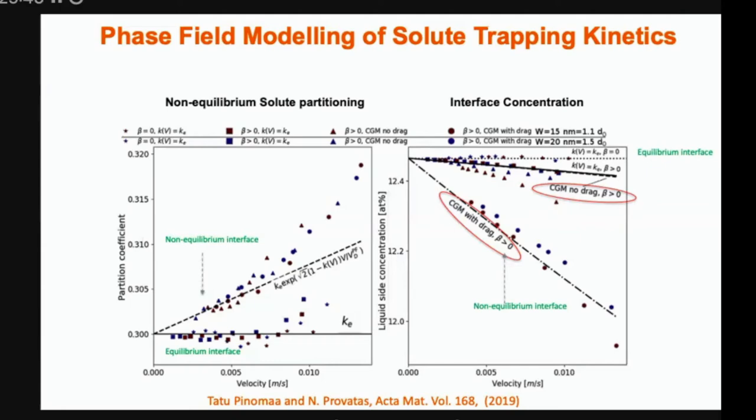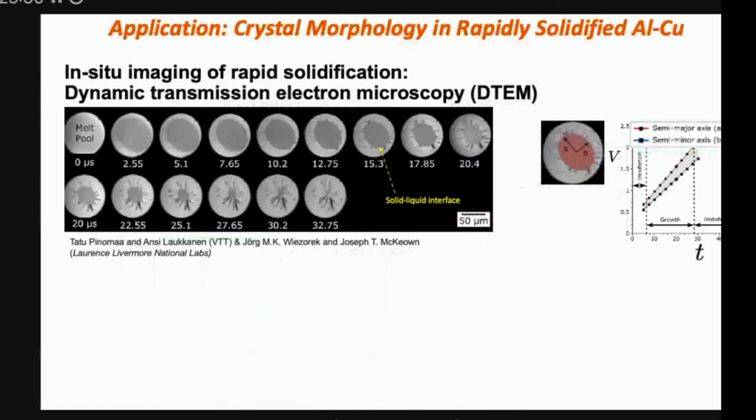So now, armed with this model that can presumably handle non-equilibrium kinetics at the interface, we set out to look at some applications of this and see if our model works and what does it actually predict and compare with experiments. So we teamed up with some people in Finland at the VTT who themselves have teamed up with some people at the Livermore National Labs who do dynamic transmission electron microscopy. And the long and short of this, you take liquid aluminum or liquid aluminum copper, you splat it on some surface so it gets really cold, really fast, and a melt pool develops that then closes in.